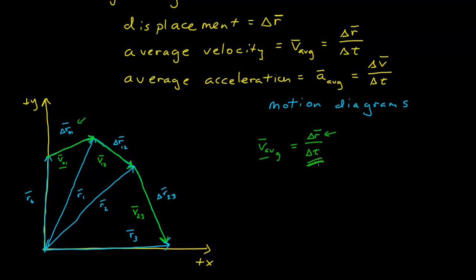Because the time difference is the same for each segment of the motion diagram, the relative lengths between the average velocities as drawn are meaningful. The length of average velocity 2–3 is larger than the length of average velocity 1–2, which is significant, just like the displacements are larger. What you can't do is compare the lengths of the velocity vectors directly to the lengths of the displacement vectors because they have different units entirely. So now we've drawn the average velocity vectors on this diagram.